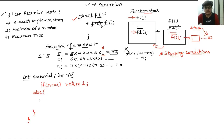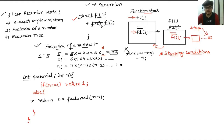In the else part we return something. If the value of n is not equal to 1, we return n * factorial(n−1). This line is the main crux of the whole problem. It is indeed a recursive call — you can see the function is called factorial and inside it we are again calling factorial. The difference is that instead of passing n, we are passing n−1.